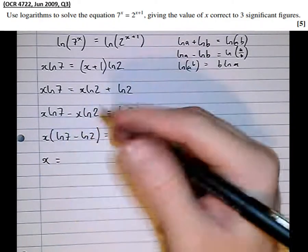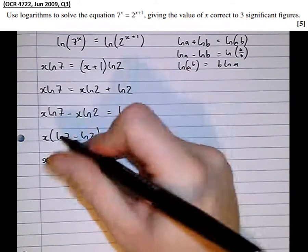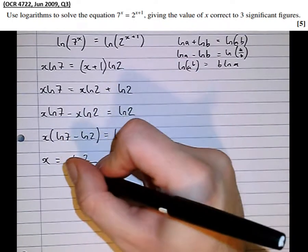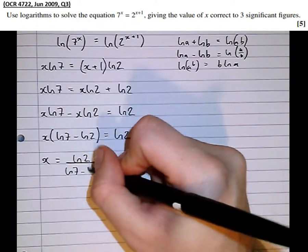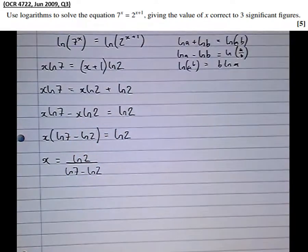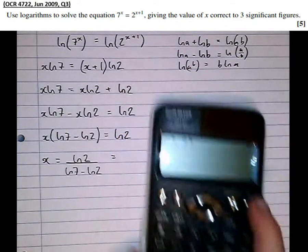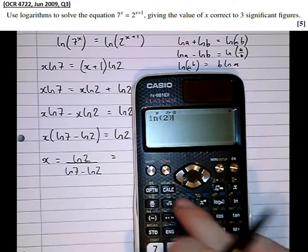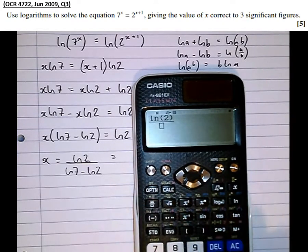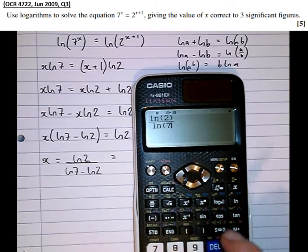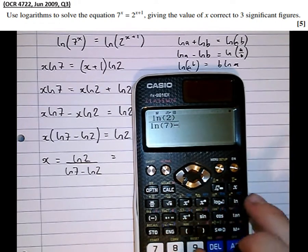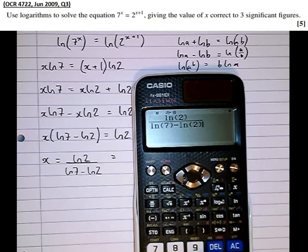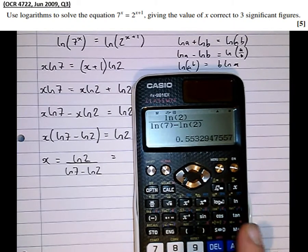Then x equals log 2. We're going to divide by log 7 minus log 2. And there we are, there's the answer, which if I put in the calculator. So log 2 over log 7 minus log 2 equals 0.553 to three significant figures.